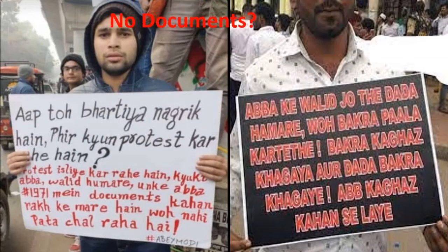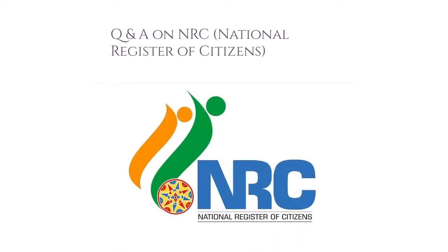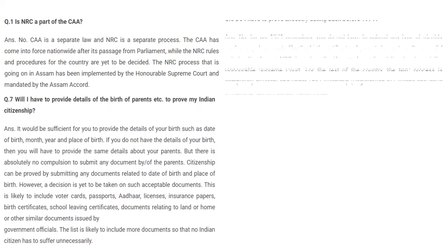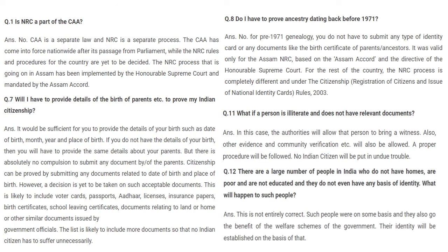It is also believed that the protest was for those Muslim poor people who are living in India for more than 20 years, or those who are Indian citizens by birth but do not have any documentation to prove the same. In contradiction to this, some unknown sources of the government revealed 13 FAQs. The FAQs stated that if people are illiterate and do not have proper documentation, the authorities will allow that person to bring a witness to prove their citizenship. Other evidences and community verification will also be allowed, and no Indian citizen will be put in undue trouble. It is also stated that NRC is a separate process and rules regarding CAA are yet to be made.